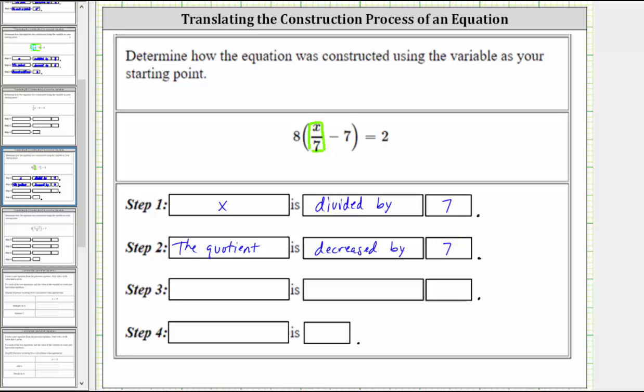Step 2 gives us the expression inside the parentheses, and now looking outside the parentheses we have this 8 here, which means 8 times the difference inside the parentheses. Therefore, step 3 is the difference from step 2 multiplied by 8.